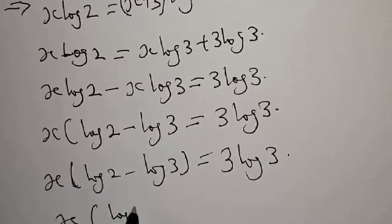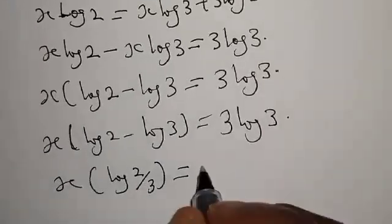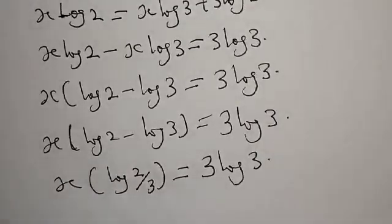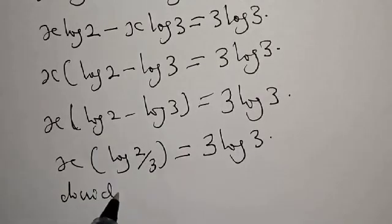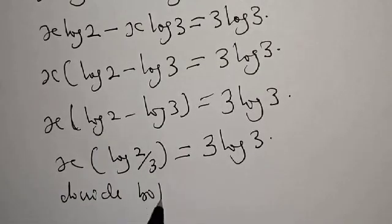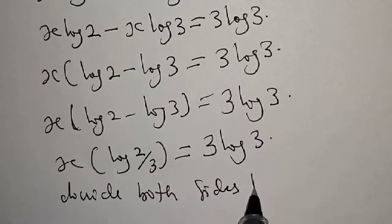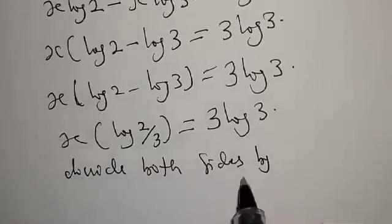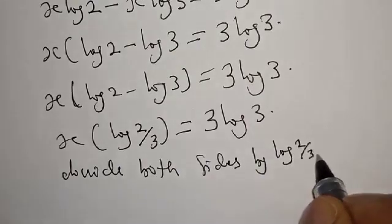x times log 2 over 3 will be equal to 3 log 3. Let's divide both sides, divide both sides by log 2 over 3.